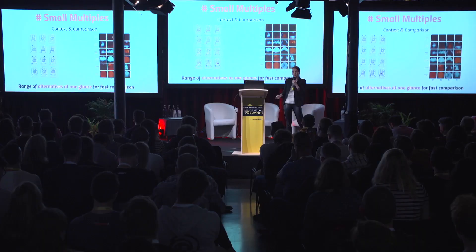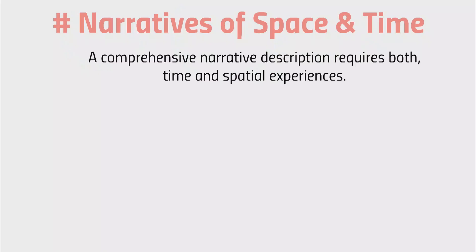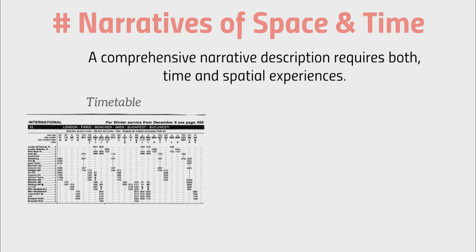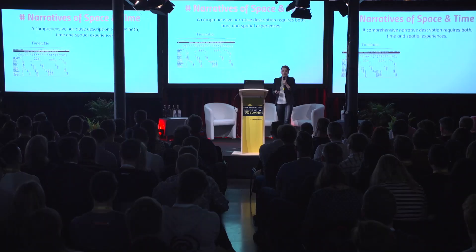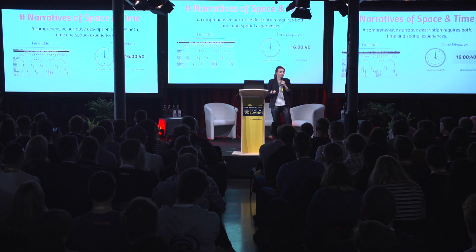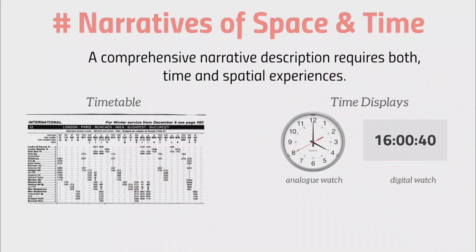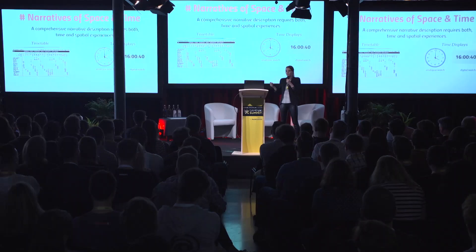The fifth principle is narratives of space and time. The official description says it requires both time and spatial experiences. A classic example is a train schedule — the stops represent spatial experience, departure times represent time experience. Another example is different watch displays: both show the same information, but an analog watch won't tell you AM or PM, while its clock hands convey a sense of the duration of a second or minute. Neither is better than the other — it depends on context. Context is your best friend; you always need to consider what is required and expected.